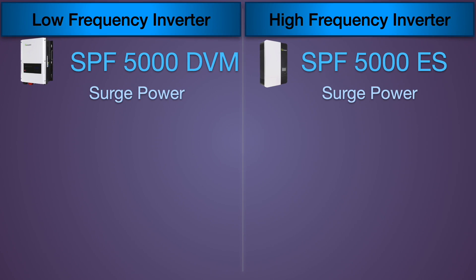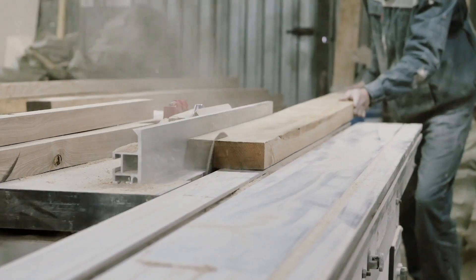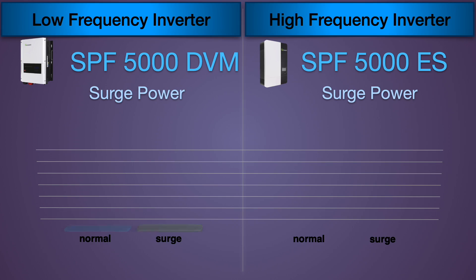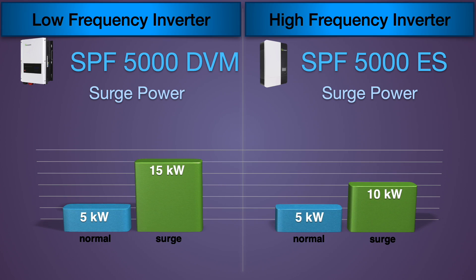So surge power, this is how much can it surge over its recommended 5,000 watts in this case. This is for starting things like well pumps, compressors, any kind of motors, air conditioners. And the winner is going to be the low frequency on this. You can see we get a surge of 15 kilowatts against only 10 kilowatts for the high frequency.